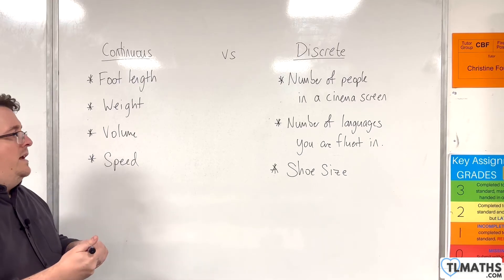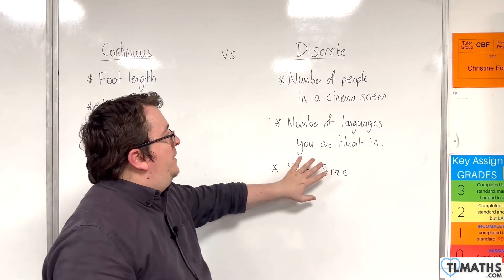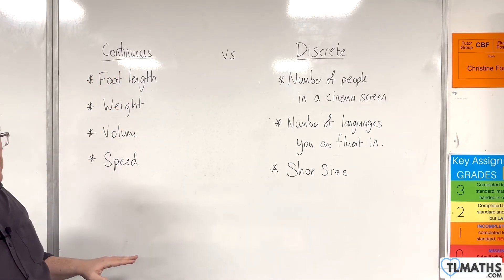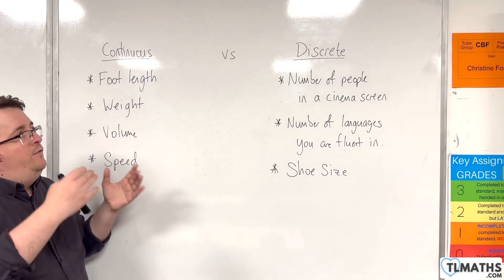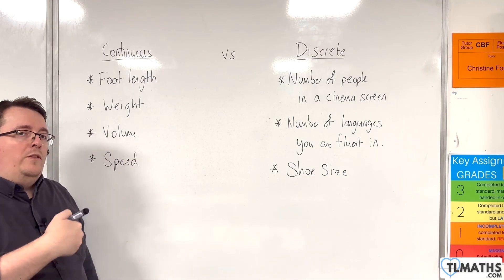So when it comes down to it, it's all down to whether it's something that can be counted or something that can be measured. That's probably the best way to consider this if you're faced with the question of whether this bit of data is discrete or whether it is continuous.